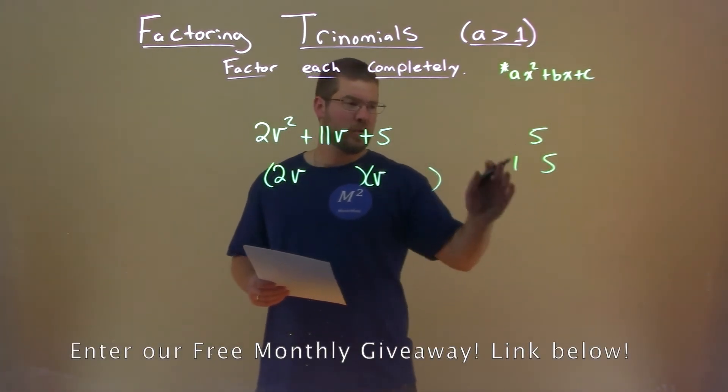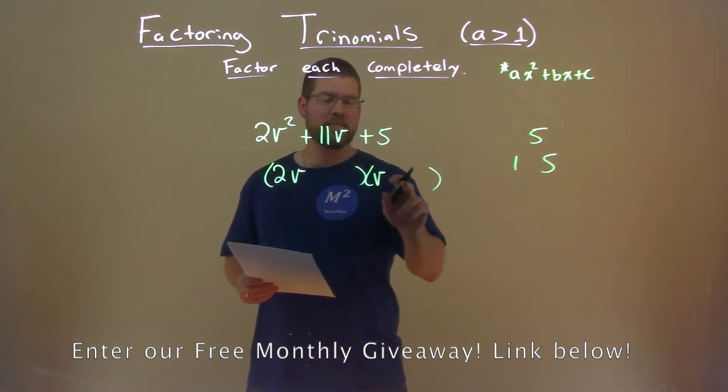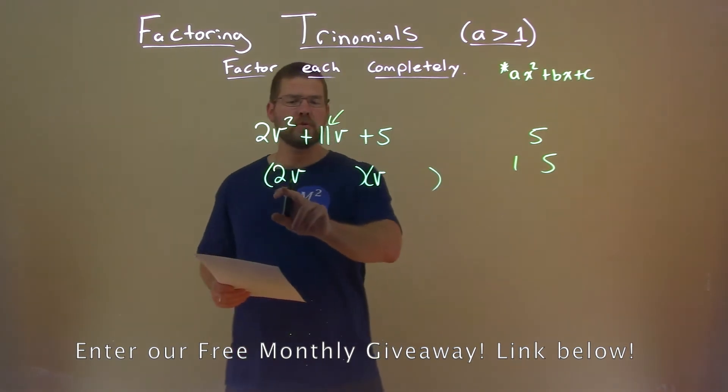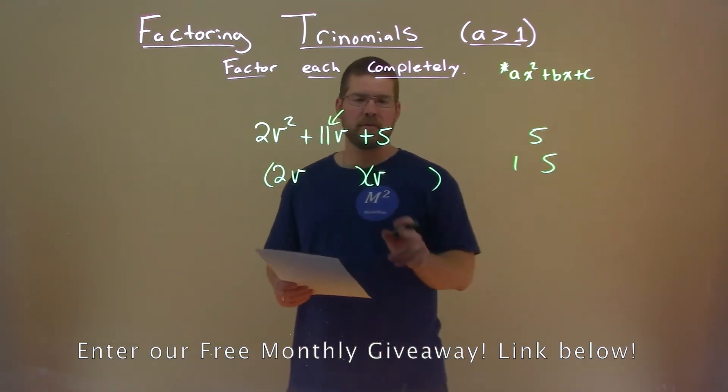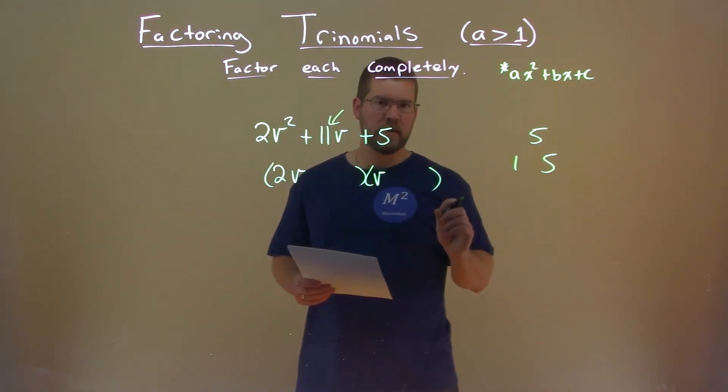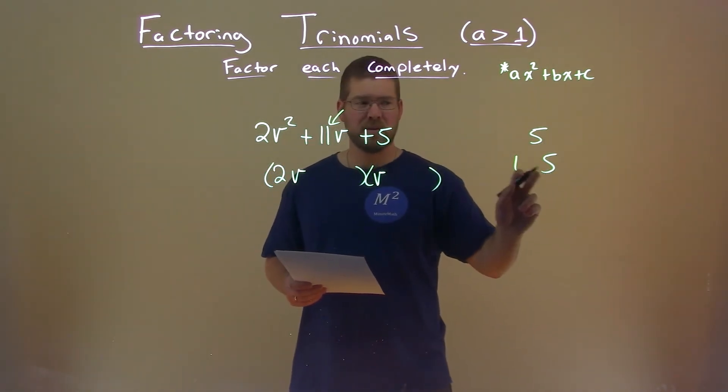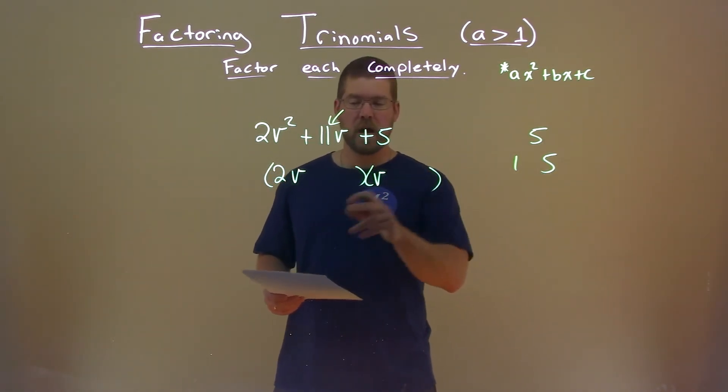So once I have that list, it's only 1 and 5, so they have to be here. We're then looking at the b value. And we say, okay, 2 times 1 of these numbers plus 1 times the other number, which one gets us 11? Well, 2 times 5 is 10, plus 1 is 11. We got it.